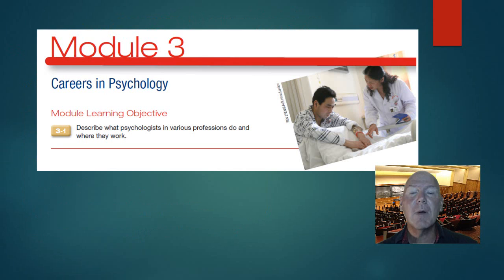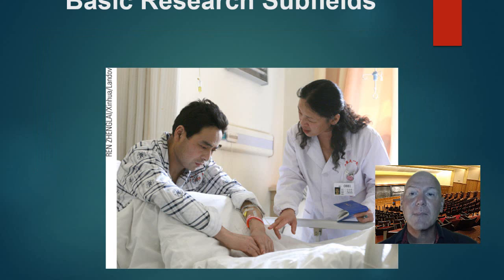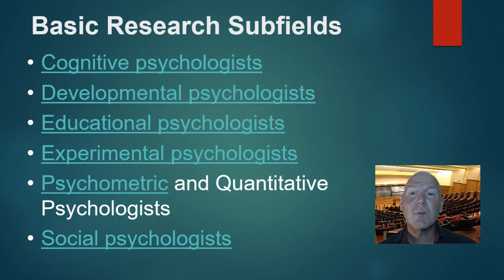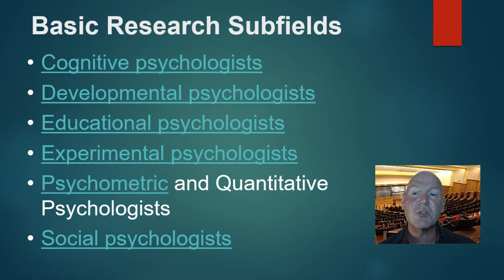Module three's learning objectives describe what psychologists in various professions do and where they work. The basic research subfields include cognitive, developmental, educational, experimental, psychometric, and social psychologists. There are actually over 50 branches listed by the American Psychological Association, so there are many things out there to explore.